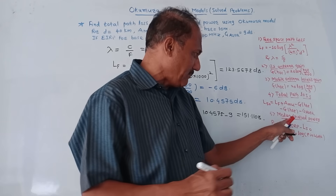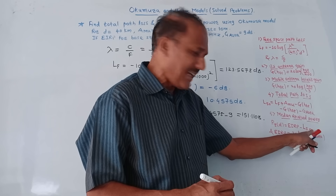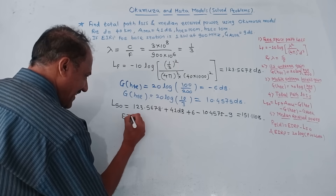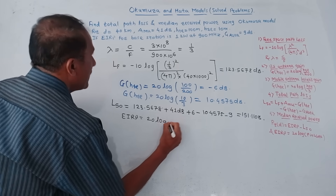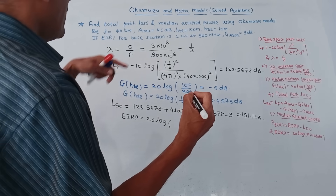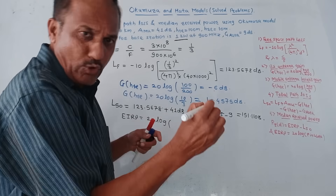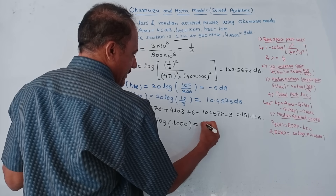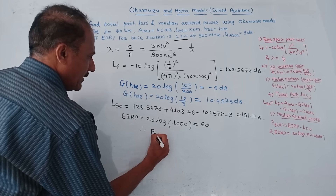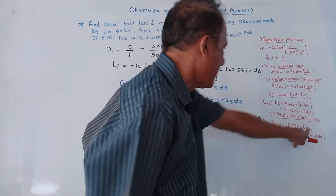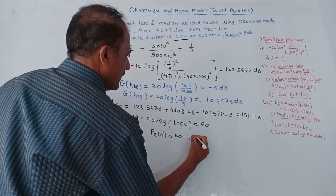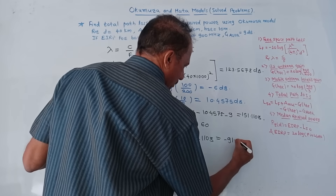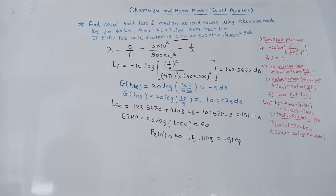To calculate the last part — median received power — we use: PR(d) = EIRP − L50. First, EIRP = 20 log(power in watts) = 20 log(1000) = 60 dB. Therefore, median received power = 60 − 151.1103 = −91.04 dB. This is the way to solve numericals using the Okumura model.